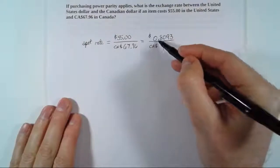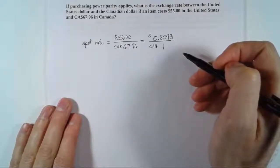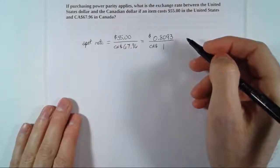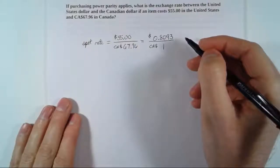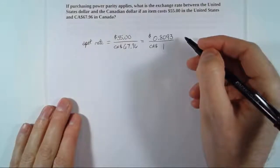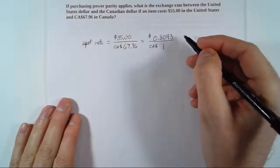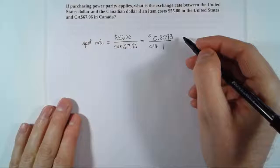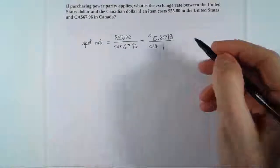Now purchasing power parity is more likely to apply for some items than for others, and obviously if we have tariffs and transportation costs and things like that, it can prevent purchasing power parity from applying. But in this case, if purchasing power parity does apply and if we know the prices in two different currencies, we can find the spot exchange rate by finding the ratio of the prices.